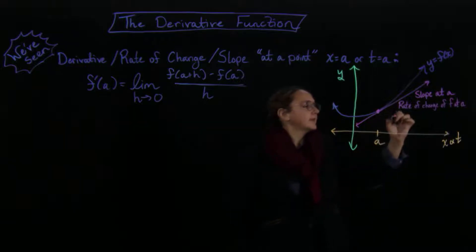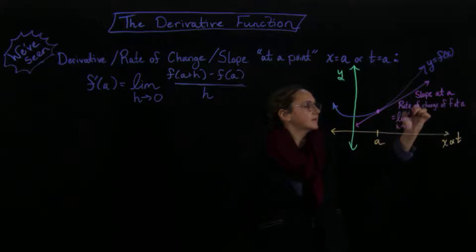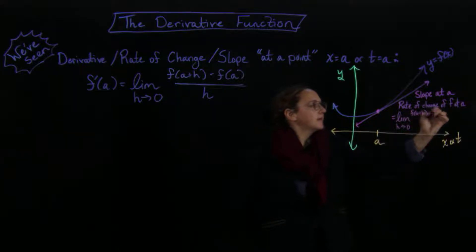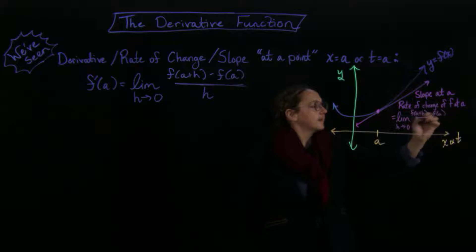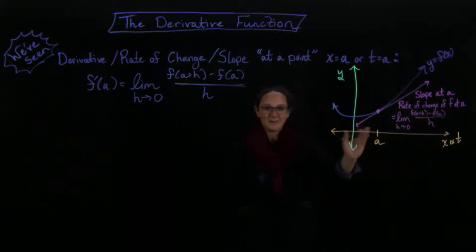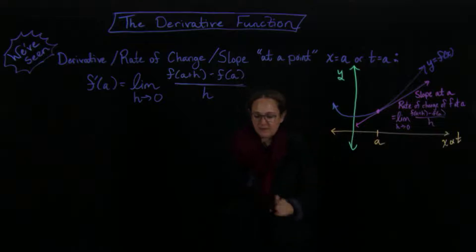That's the same thing as the limit as h goes to zero of f of a plus h minus f of a divided by h. These were all the same thing, and it was at a particular value a — that was very important.